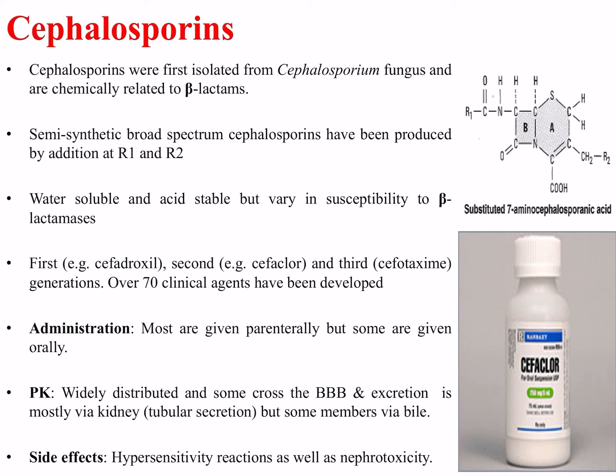There are several generations — first, second, and third — and over 70 different clinical agents have been developed. These include first-generation cefadroxil, second-generation cefaclor, and third-generation cefotaxime. Most cephalosporins are given parenterally, but some are given orally.